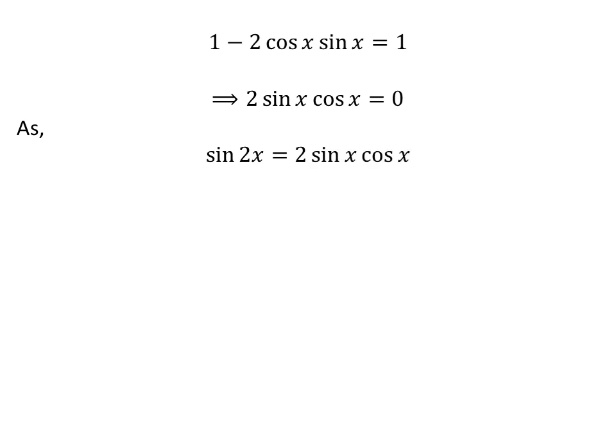We know the trigonometry identity: sine of 2x is equal to 2 times sine of x times cosine of x. The proof of this identity has been explained in the video appearing in the upper right corner of this video, and the link is also given in the description section.